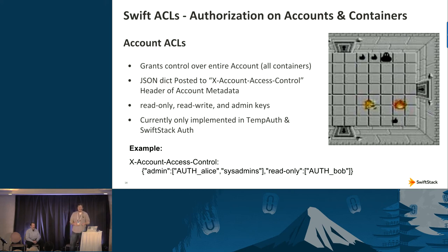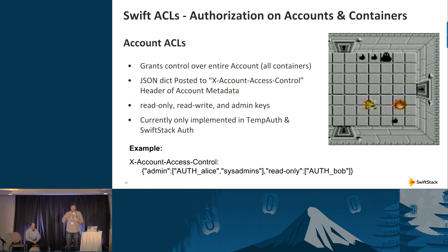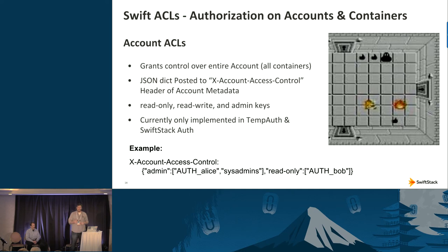Account ACLs extend that idea. In Swift, on the account itself, you can set which users and groups have access rather than defining it in the identity management system. You already have to store Swift accounts for billing — account ACLs let you store that access information there. If you have a legacy auth system and can't tie cloud resources back to your identity management system, account ACLs let you flip it around and let resources define which users and groups can access them.